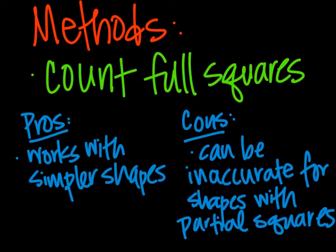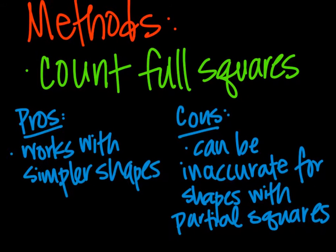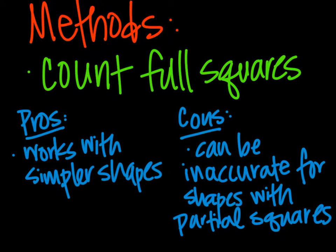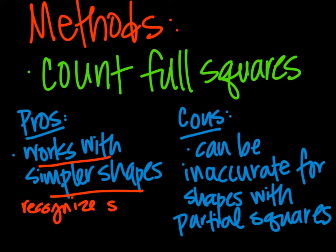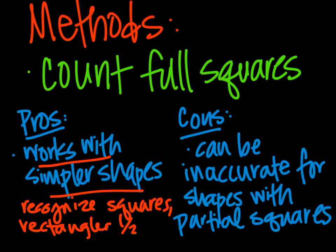Our very first method is counting full squares. We've talked about all of these methods in class. One of the pros is it works with simpler shapes, so shapes that are not as extreme. If you can't recognize squares, rectangles, and half units right away, then the shapes are a little bit too extreme and we'll look at some that are more extreme.